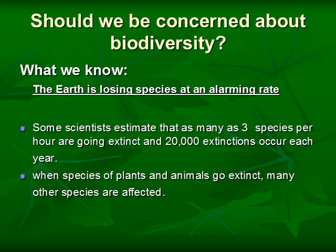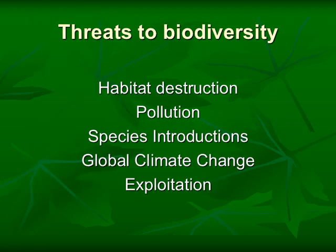Why should we care about biodiversity? The answer is yes — we should be concerned. Because there is extinction going on. The Earth is losing species at an alarming rate. There is an estimate that three species go extinct per hour, and around 20,000 extinctions occur each year. When species of plants and animals go extinct, many other species are affected. What causes this extinction? Habitat destruction, pollution, species introduction, global climate change, and exploitation.